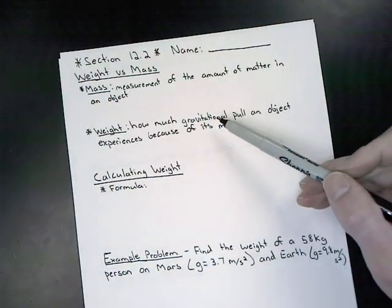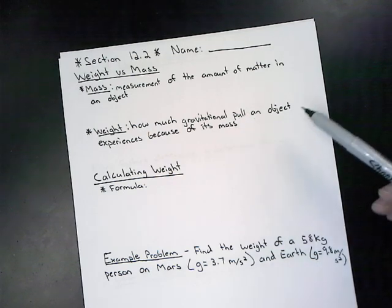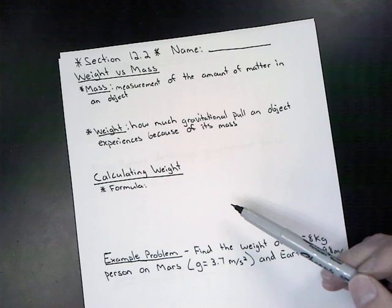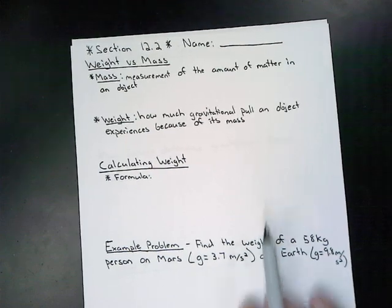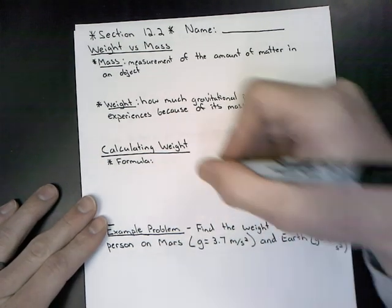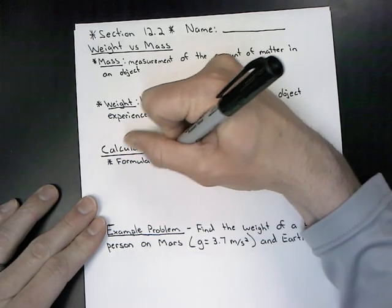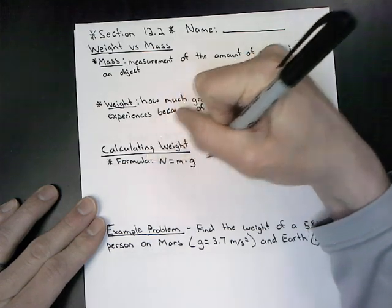With weight, we have this term gravitational pull. That gravitational pull is going to vary from place to place in the universe, and so therefore our weight is going to alter between one place and another. Weight is defined as how much gravitational pull an object experiences because of its mass. We can find weight using the formula: W equals M times G for gravity.